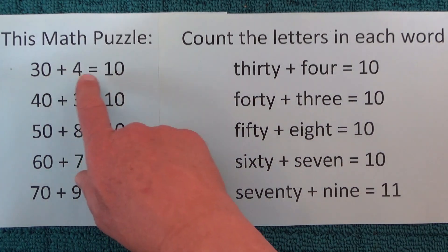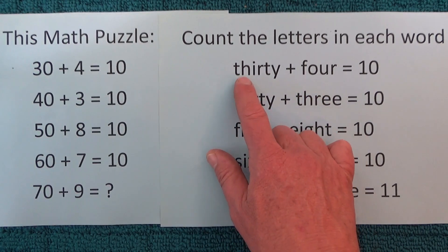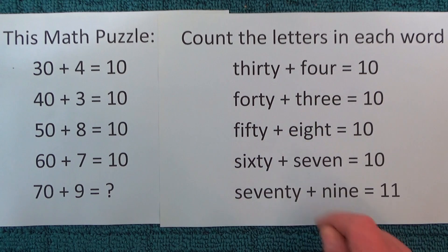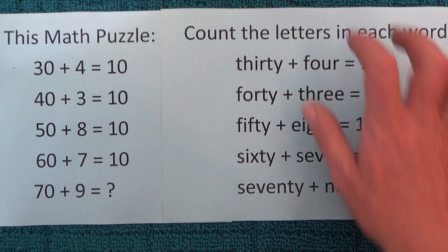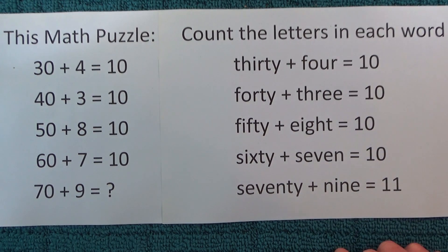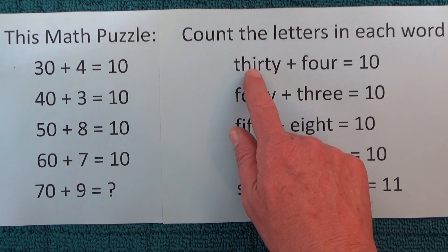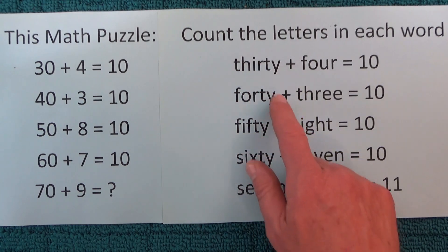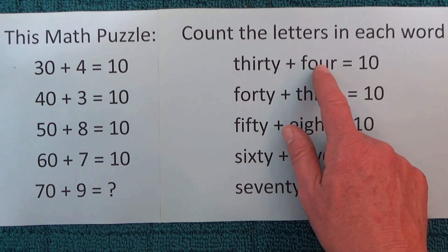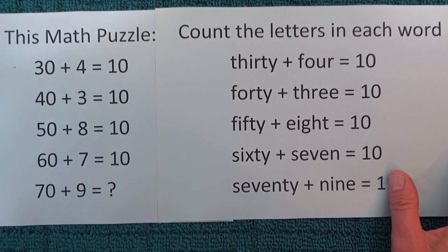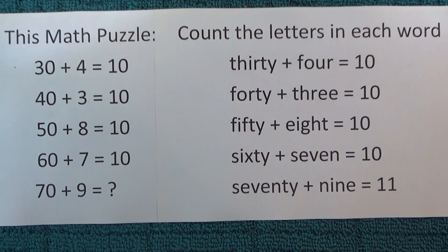So if you look here, 30 plus 4 equals 10. If you convert that to words you've got thirty plus four equals 10, and then all we need to do is count the number of letters in each of those two words. So it's 1, 2, 3, 4, 5, 6 - six letters in the word thirty, and 1, 2, 3, 4 letters in the word four. So 6 and 4 equals 10.